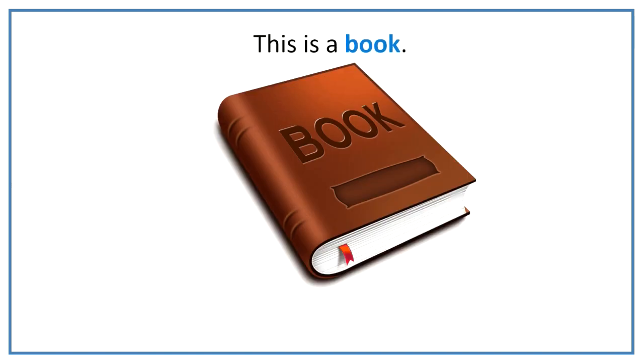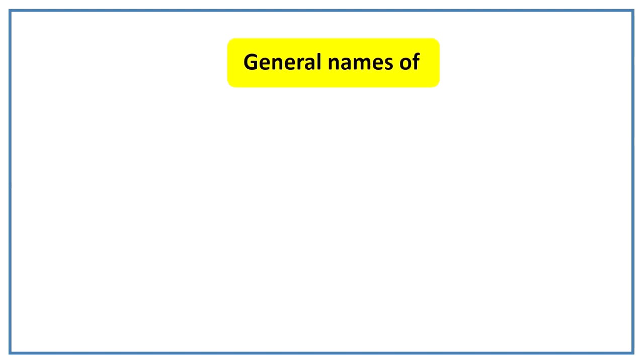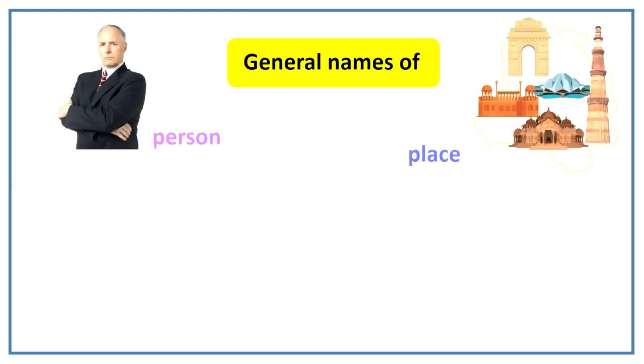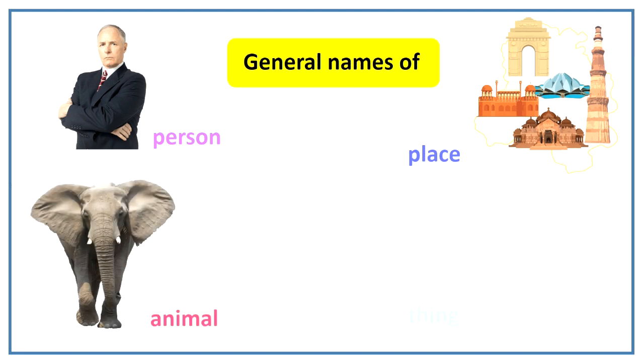This is a book. Here book is a general name for the thing or we can say class of thing. So here book is a common noun.